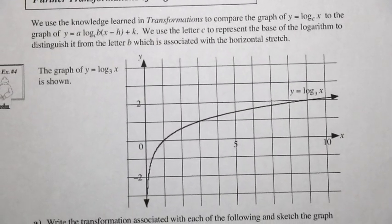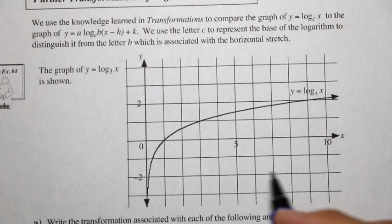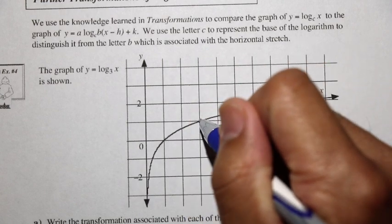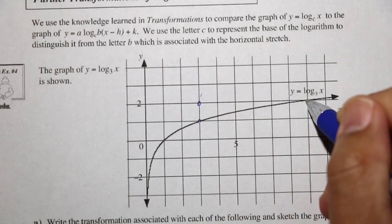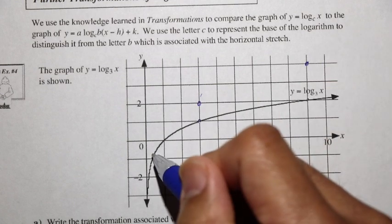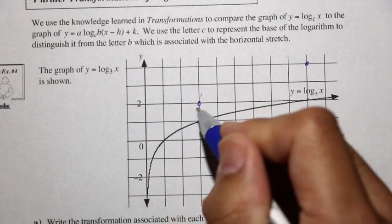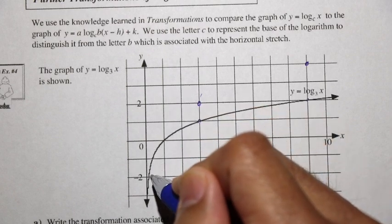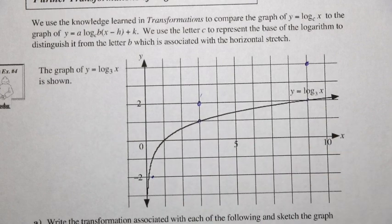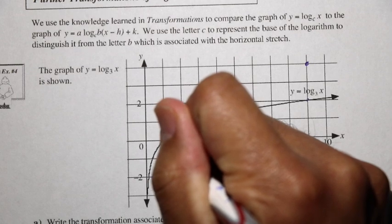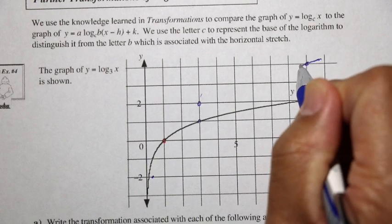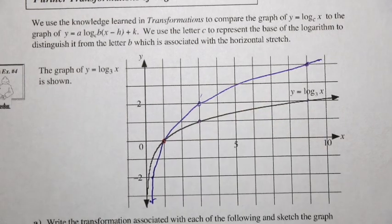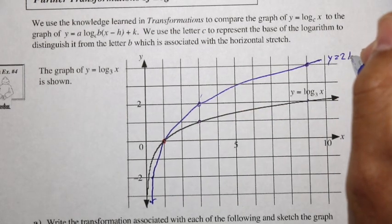Let's look at the graph and sketch parts 1, 2, and 3. For part 1, we have a vertical stretch by a factor of 2. Taking some key points: the y-value of 1 becomes 2, and the y-value of 2 becomes 4. An important point is that anything already on the x-axis remains an invariant point. So we get this graph for y equals 2 log base 3 of x.